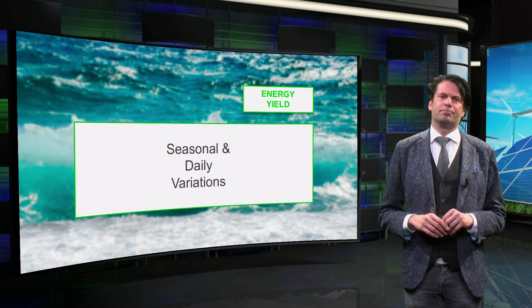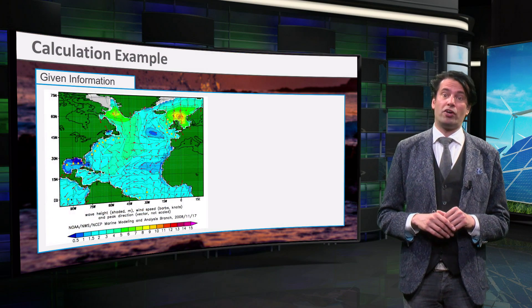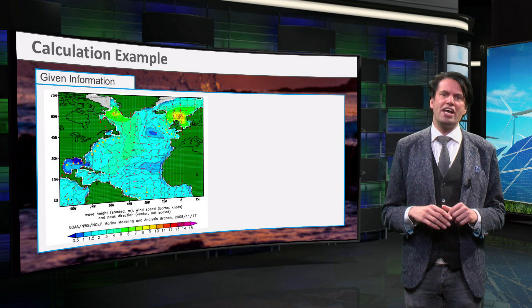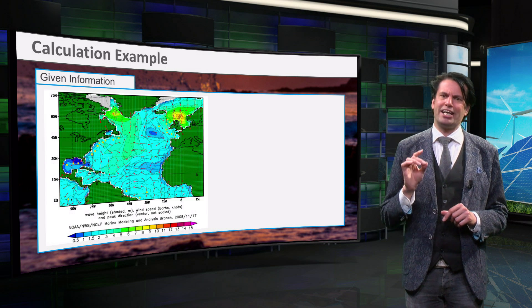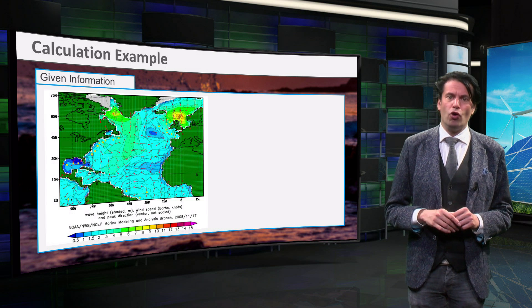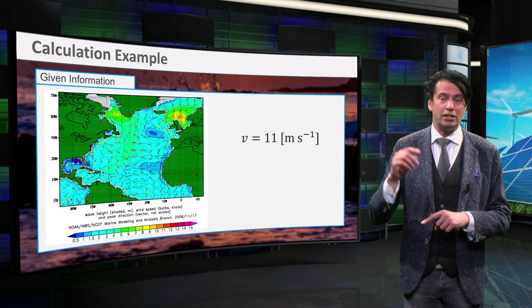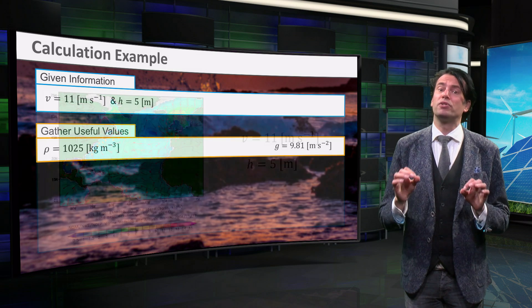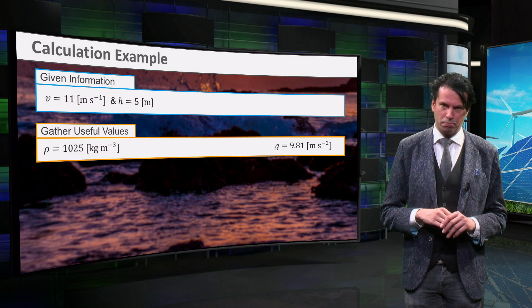Let's go through a calculation. This map shows a part of the Atlantic Ocean between North America and Europe. We can gather that the highest waves occur around the North Sea. Let's take a moderate estimate at this location. A wave speed of 11 meters per second and a height of 5 meters occur. From this we can calculate the potential energy, which amounts to 691 kW per meter.